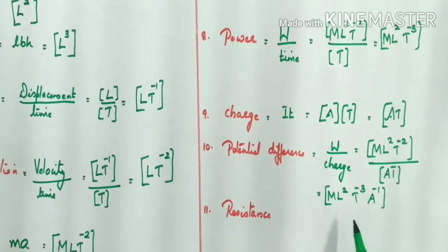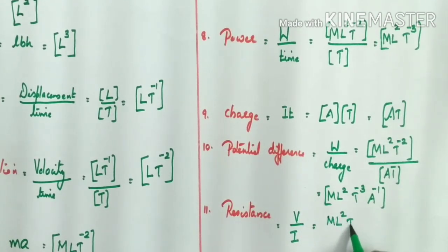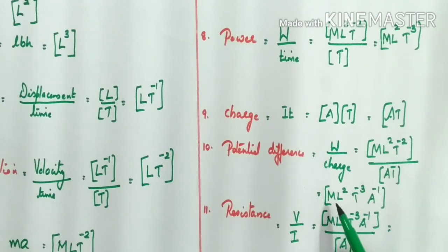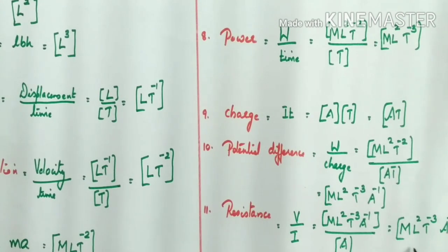Now, resistance. According to Ohm's law, resistance R equals potential difference divided by current: R = V/I. The dimension of potential difference is [ML²T⁻³A⁻¹] and the dimension of current is A. Dividing, A in the denominator combines with A⁻¹ to give A⁻². So the dimensional formula for resistance is [ML²T⁻³A⁻²].